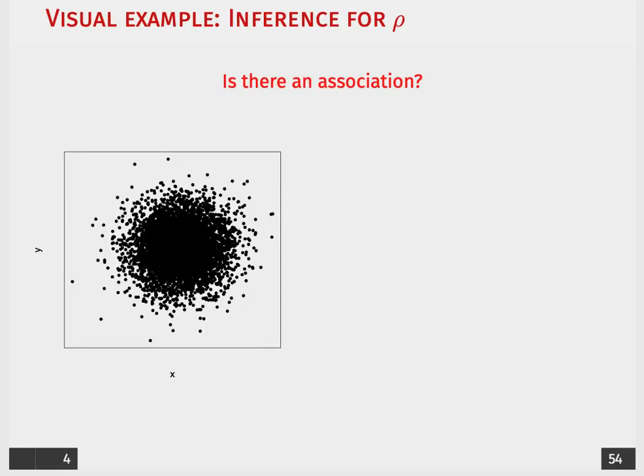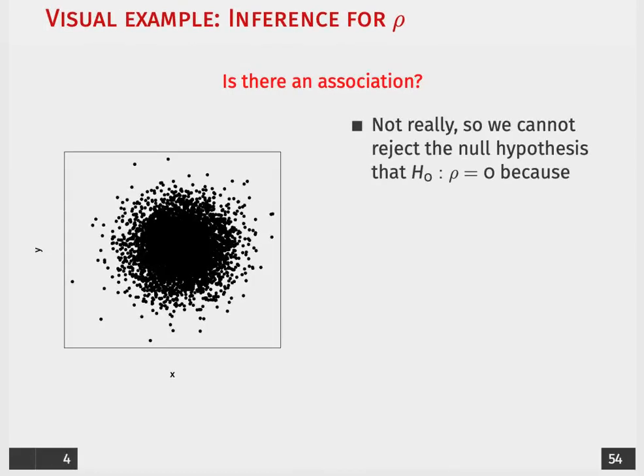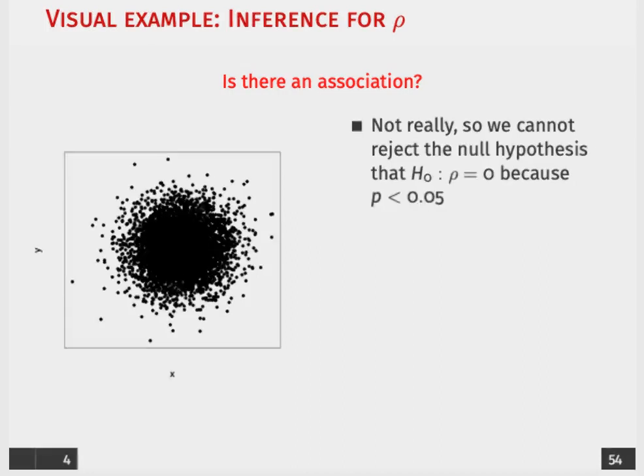So to drive this point home, I'll ask you to briefly pause and think about, is there an association here? Now, it doesn't really appear that there is a relationship, but can we say anything about rejecting a null hypothesis based on the fact that we don't see an association? No, and that's because we need to construct a hypothesis test in order to claim that there is not sufficient evidence to reject the null hypothesis that a relationship does not exist between the two variables.